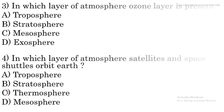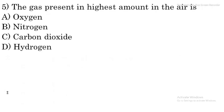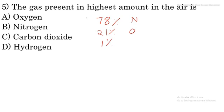Question number 5: which gas is present in the highest amount in air? About 78% of the composition is nitrogen, 21% is oxygen, and 1% consists of the remaining gases such as hydrogen, neon, helium, ozone, and carbon dioxide. So the highest composition is 78% nitrogen. Option B is the right option.